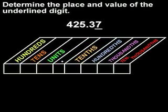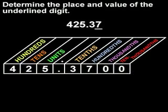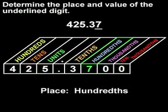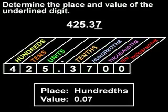So for this problem, let's put our given number, 425.37, into the place value chart. Notice that we can fill in any empty positions at the end with zeros. Now we can see that the underlined digit, 7, is in the hundredths place. So the value of the digit 7 is 7 hundredths, which is written as 0.07.